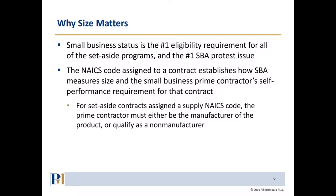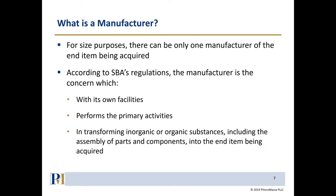The NAICS code assigned to the contract sets the size requirement and tells us what type of contract it is. If the procuring agency assigns a services NAICS code, it's a services contract and performance requirements are based on services. If a supply NAICS code is assigned, the self-performance requirements are based on supply requirements. For a supply contract, the prime contractor on a set-aside either has to be the manufacturer of the product or qualify as a non-manufacturer.